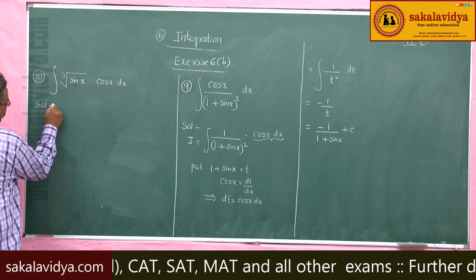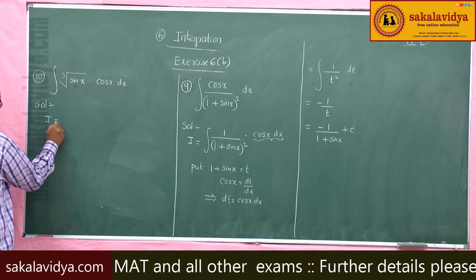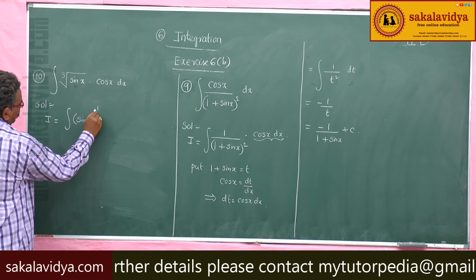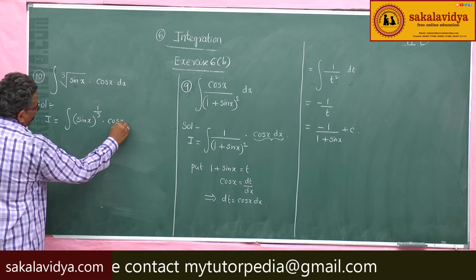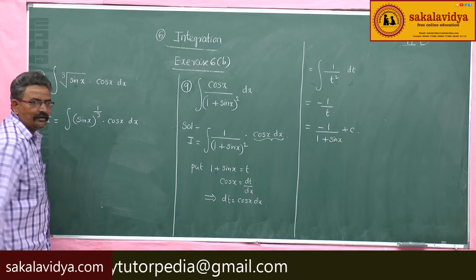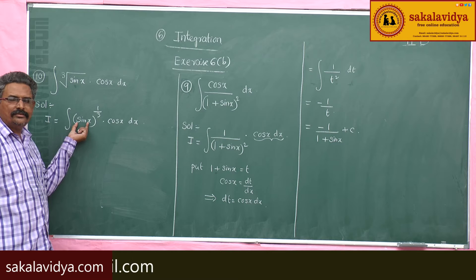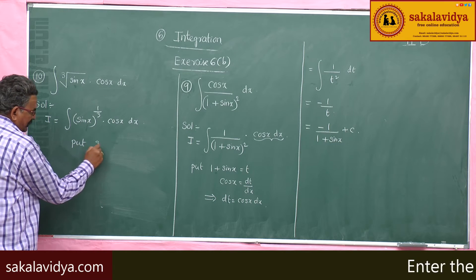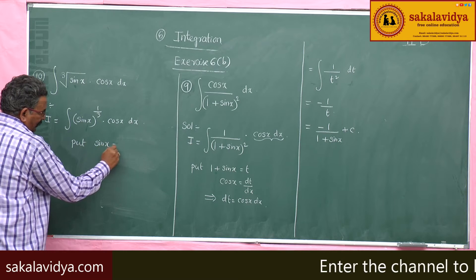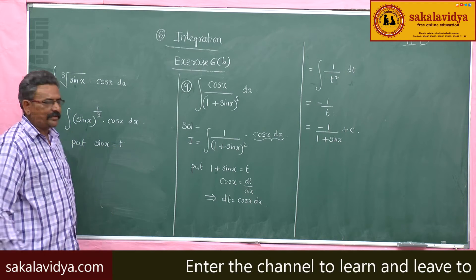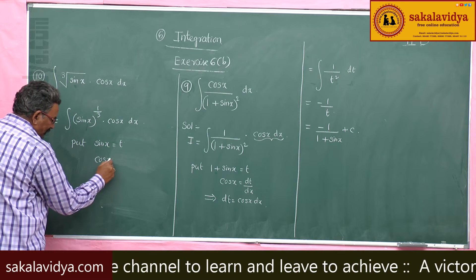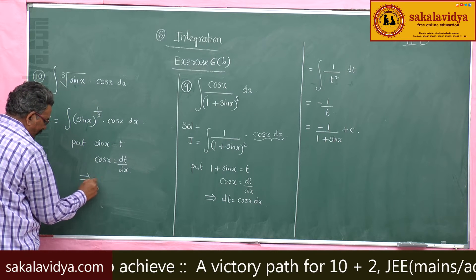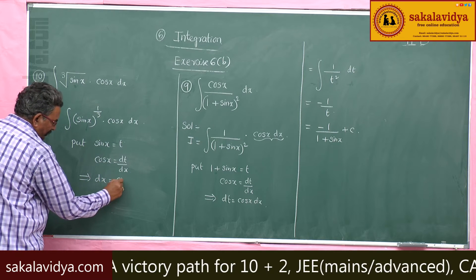Solution: I equals to integral of sin x to the power of 1 by 3 into cos x dx. Put sin x equal to t. Differentiate both sides with respect to x. So, cos x equals dt by dx, and therefore dt equals cos x dx.